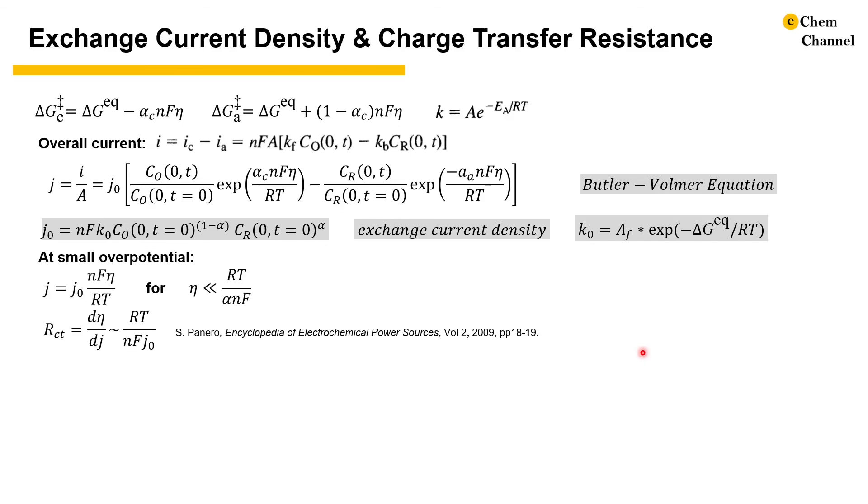At very small over potentials, the Butler-Volmer equation can be written as Taylor expansions and be approximated as the equation here. Since charge transfer resistance is the derivative of activation over potential over current, we can find the linear relationship here. Note that if the reaction is highly irreversible, this equation will not apply and extrapolation from Tafel plot is more reliable.